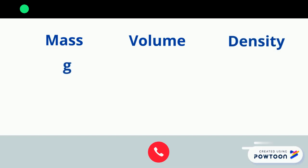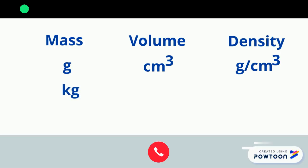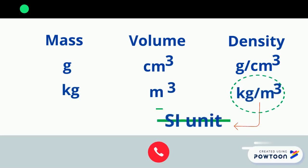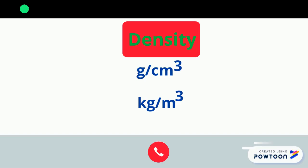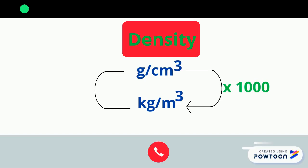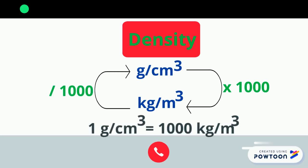We usually use two units for density. If we use mass in grams and volume in cubic centimeters, we obtain the density in grams per centimeter cubed. If we use mass in kilograms and volume in cubic meters, we obtain the density in kilograms per meter cubed, which is the SI unit of density. To convert from grams per centimeter cubed to kilograms per meter cubed, multiply by 1,000. To convert the other way, divide by 1,000. One gram per centimeter cubed equals 1,000 kilograms per meter cubed.